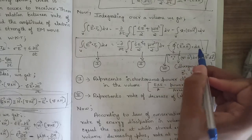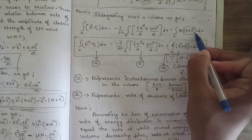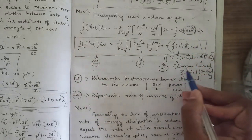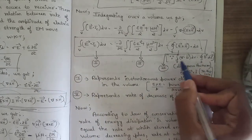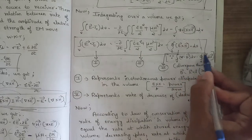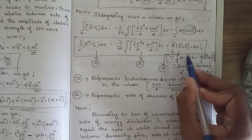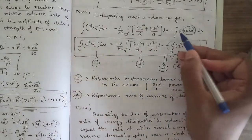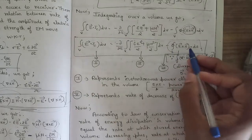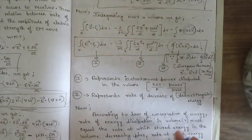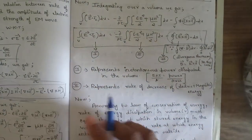This last volume integral term is replaced by a surface integral of (E × H)·dS, using the divergence theorem: the volume integral of ∇·D dV = surface integral of D·dS. Replacing D with E × H, we get the volume integral of ∇·(E × H) dV = surface integral of (E × H)·dS.